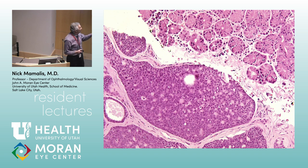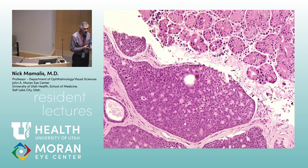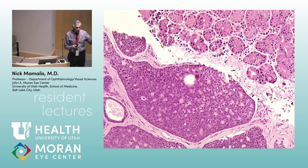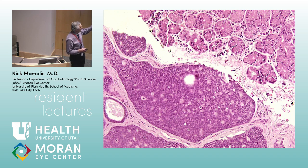We like to try when we look at these tumors to subdivide them into what particular subtype they represent. It's the basaloid variety that is the most aggressive — these are the ones you definitely don't want to see.